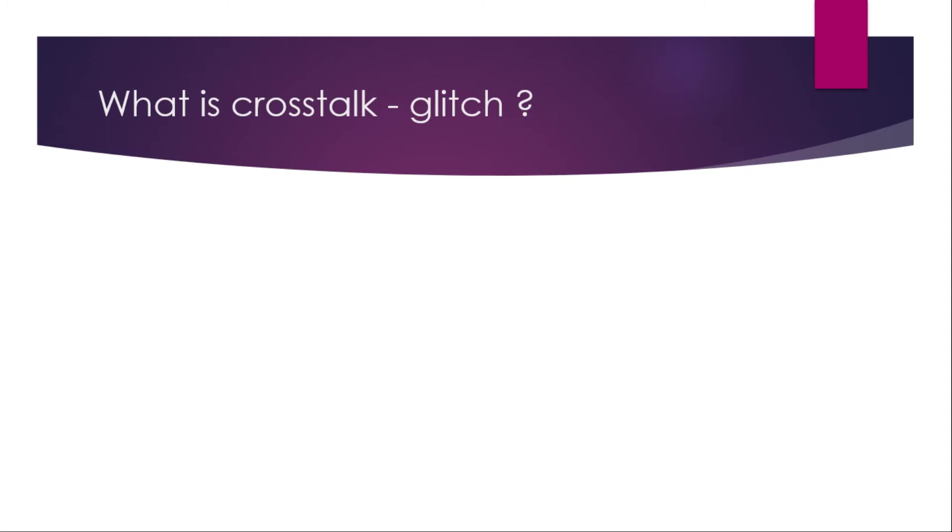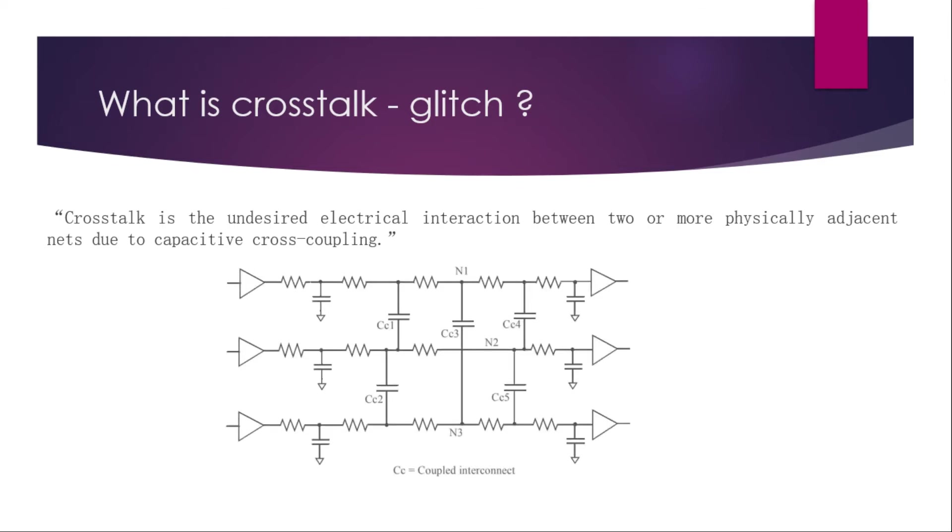We are going to discuss only about the crosstalk glitch, which is one type of problem of signal integrity. So what is crosstalk and glitch? Usually, glitch is a consequence of crosstalk. Crosstalk is the undesired electrical interaction between two or more physically adjacent nets due to capacitive cross coupling. Consider these three nets. The first net is not physically connected to the second net, but there is a dielectric between those two nets. And what is two metal separated by a dielectric? It's a capacitor.